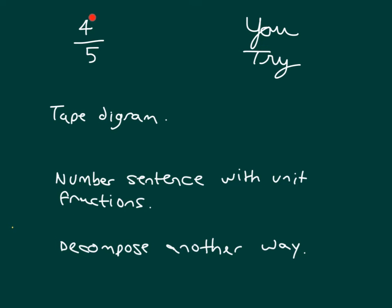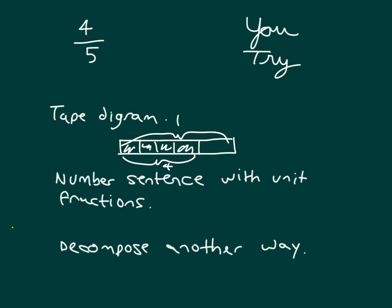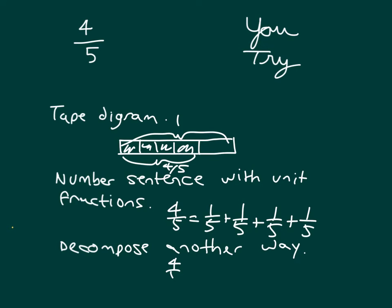It's your turn to try. Take this fraction, draw a tape diagram, give me a number sentence using unit fractions, and then decompose it another way. Did you start with a tape diagram labeled one, separated into five parts, shading in four of them, labeled four-fifths? A number sentence with unit fractions would be: four-fifths equals one-fifth plus one-fifth plus one-fifth plus one-fifth. Decomposing another way: four-fifths equals two-fifths plus two-fifths, or two-fifths plus one-fifth plus one-fifth.